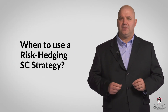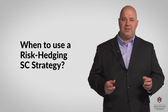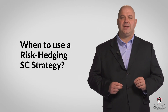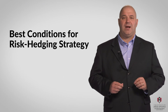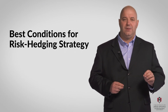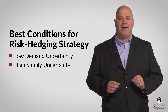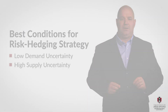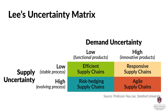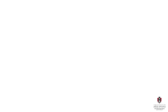When should we use a risk hedging supply chain strategy? The Lee uncertainty matrix tells us that risk hedging supply chain strategy is appropriate when demand uncertainty is low and supply uncertainty is high. Looking at Lee's uncertainty matrix, we want low demand uncertainty — that's your functional products. Risk hedging should be used with functional products that have more stable and predictable demand.